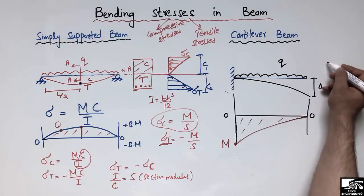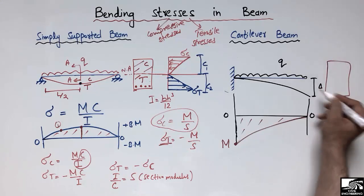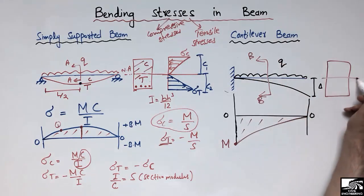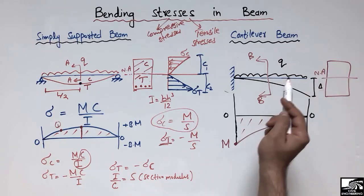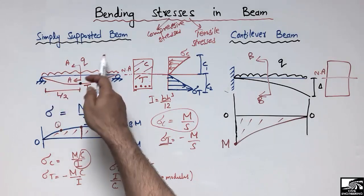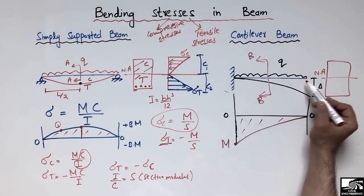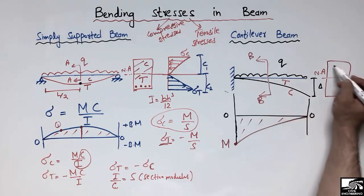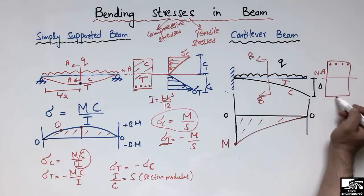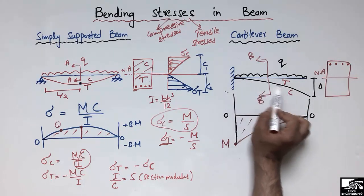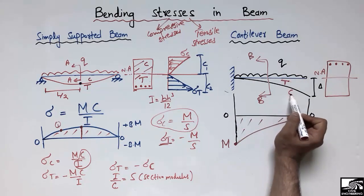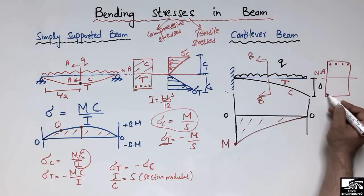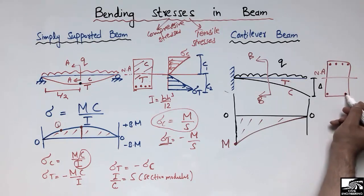Drawing the cross-section of the cantilever beam at section B-B, with the neutral axis shown, the cantilever beam shows different behavior from the simply supported beam. Due to the load, the upper portion of the cantilever beam is in tension while the bottom portion is in compression. Therefore, reinforcement is needed in the top section of the cantilever beam, not the bottom.